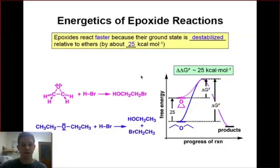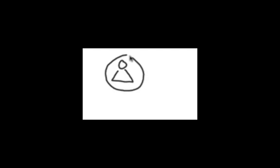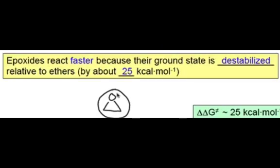The epoxide ring is interesting because it contains both an electrophile and a leaving group built into one functional group. The epoxide is the three-membered ring shown here, a three-membered ring containing oxygen. You'll recall from our discussion of the cycloalkanes that three-membered rings, and the epoxide is no exception, contain a great deal of strain energy.